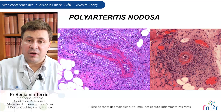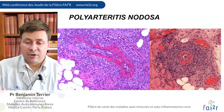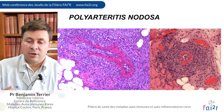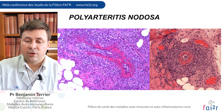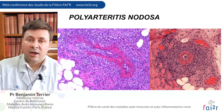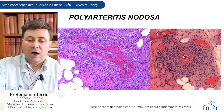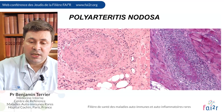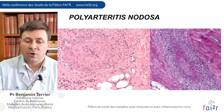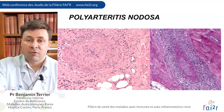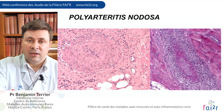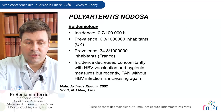There are very important infiltrates in this PAN arteritis, affecting all three layers of the artery, with necrotizing fibrinoid necrosis of the media. You can also see thrombosis of the lumen, which can be responsible for ischemia or necrosis of the affected organs.